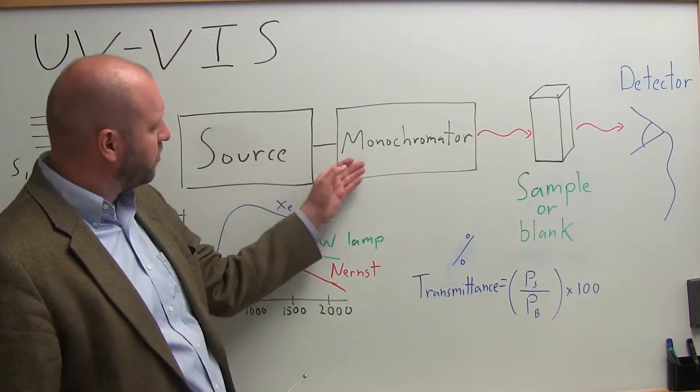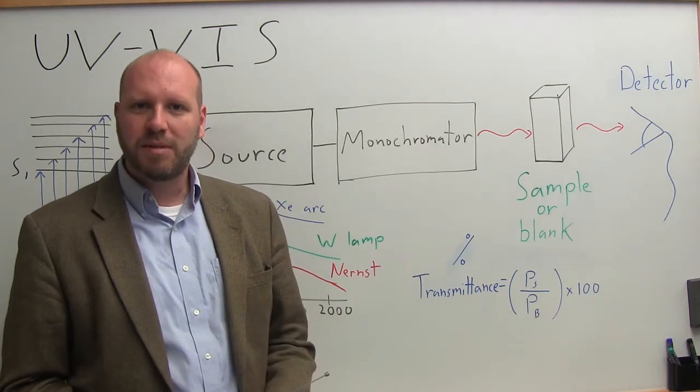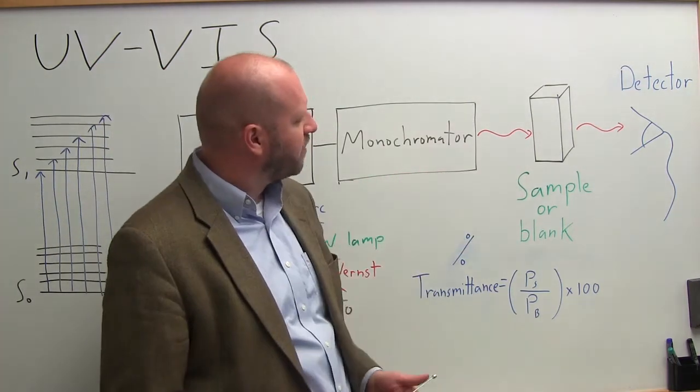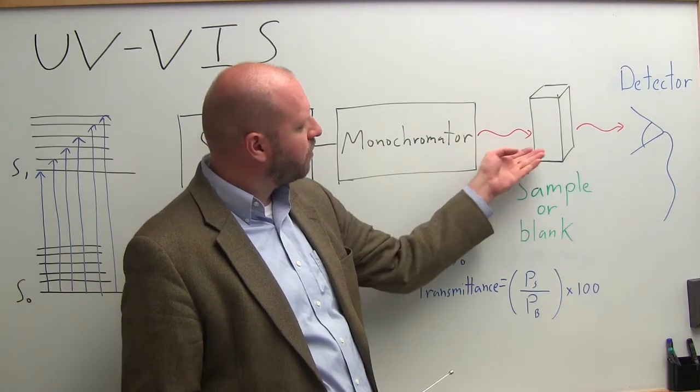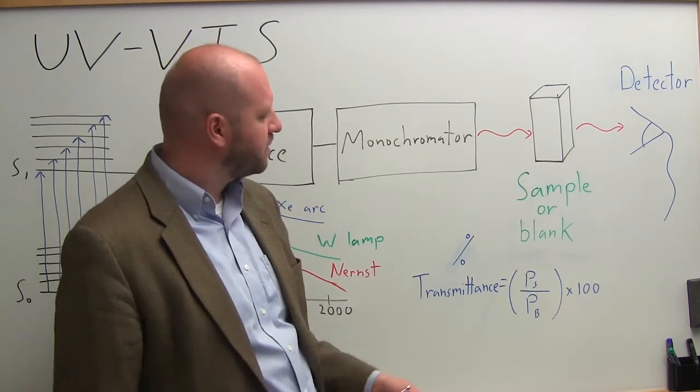After that, I put my light through a monochromator to select a given wavelength range that I know I'm going to hit my sample with. Here I have red light leaving my monochromator. This red light will then hit my sample or the blank, and it will absorb some of it, leading to less intensity.